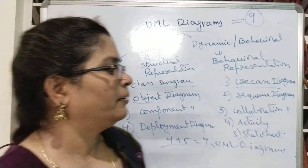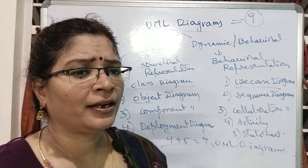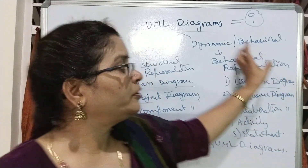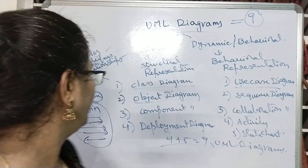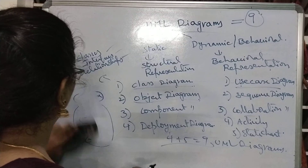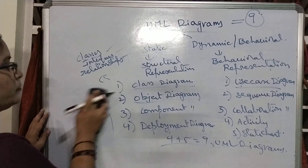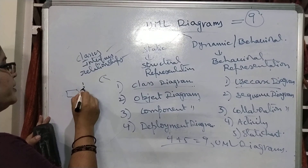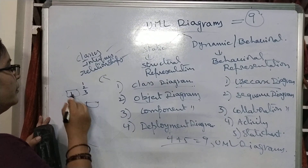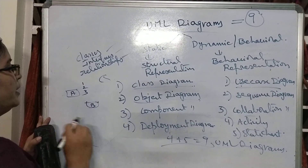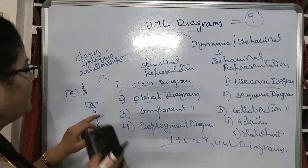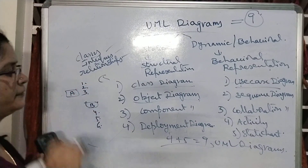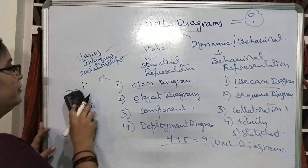The next one is the collaboration diagram. The collaboration diagram is also about how objects are connected, but not in time ordering of messages. Object A sends messages 1, 2, 3 and object B sends messages 4, 5, 6 — the messages belonging to each particular object are listed together. The collaboration diagram is also called communication diagram in StarUML.